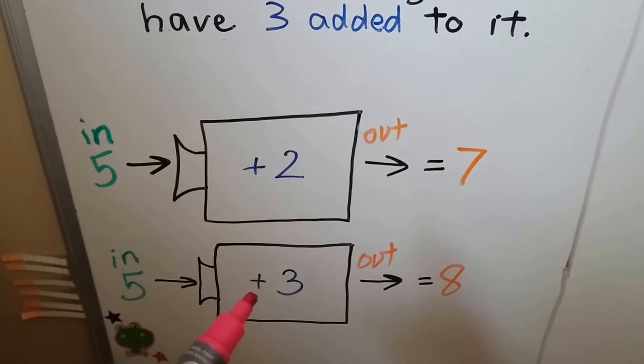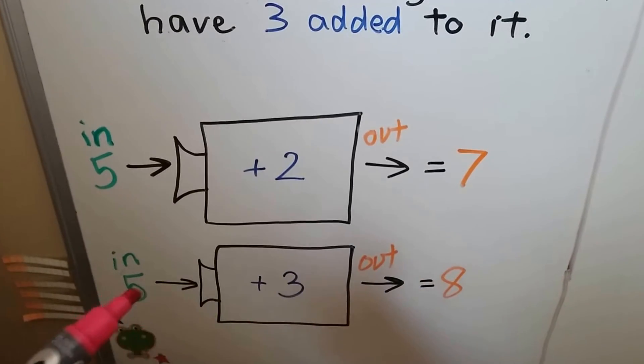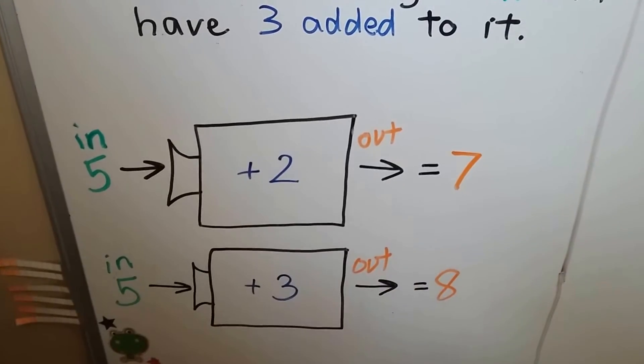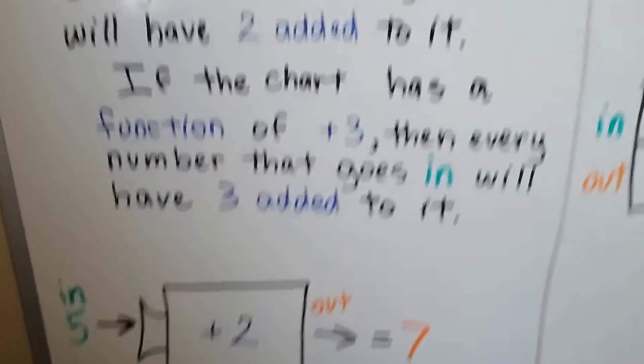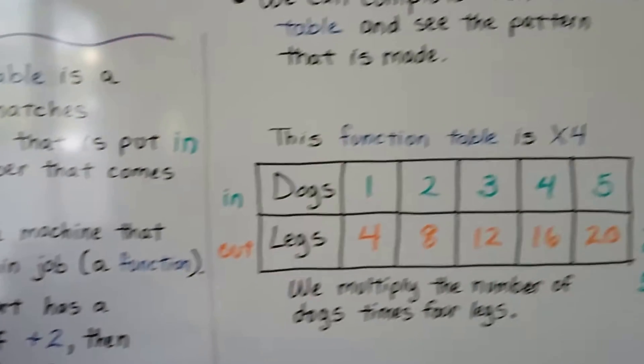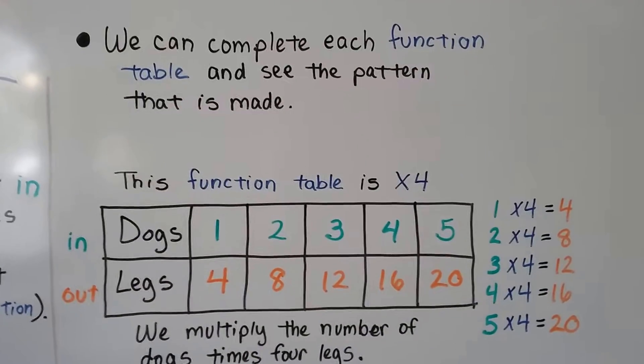If the function is plus 3, then every number we put in is going to have 3 added to it. So we can complete each function table and see the pattern that's made.